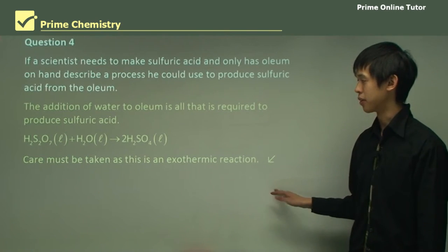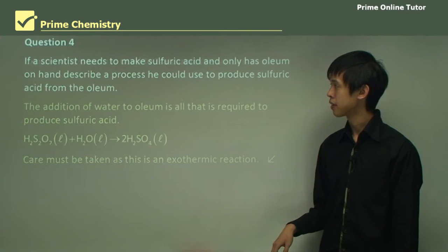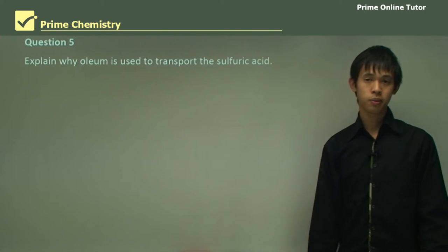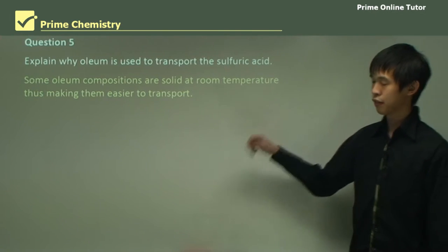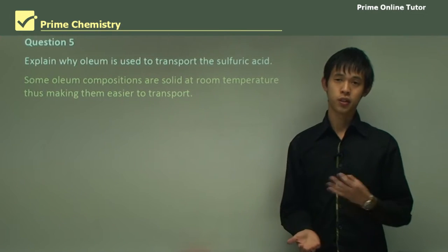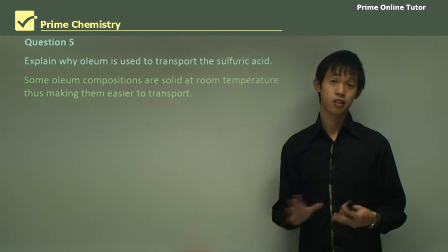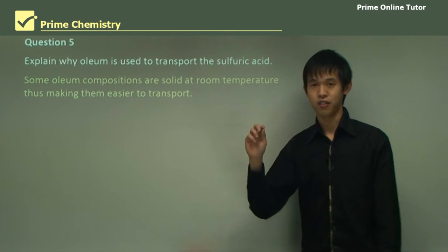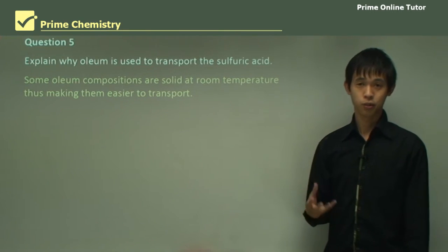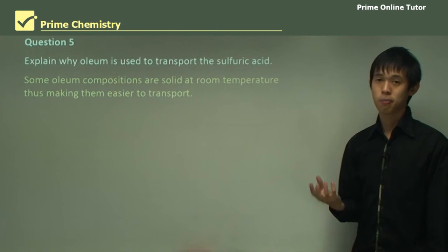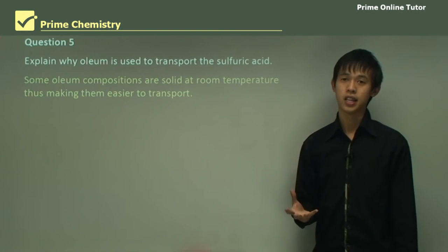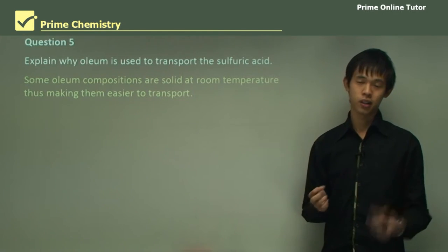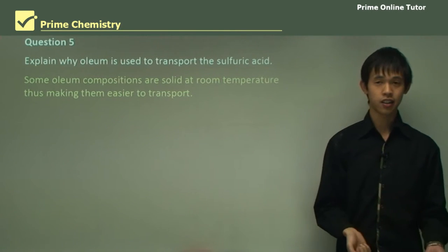Question 5: Explain why oleum is used to transport the sulfuric acid. There are different forms of oleum because different companies do things differently. Some oleum compositions are actually solid at room temperature, and for those who have studied chemistry, solid things are much nicer to transport than liquid things because they don't move around.